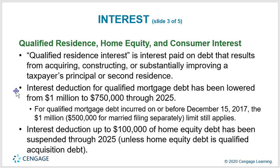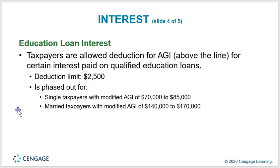Qualified residence interest is interest paid on debt from acquiring, constructing, or substantially improving a taxpayer's principal or second residence. The interest deduction for qualified debt has been lowered from $1 million to $750,000 through 2025. For qualified mortgage debt incurred on or before December 15, 2017, the $1 million limit still applies. Interest deduction for up to $100,000 of home equity debt has been suspended through 2025 unless the home equity debt is qualified acquisition debt. For education loan interest, the deduction limit is $2,500, phased out for single taxpayers with modified AGI of $70,000–$85,000 and married taxpayers with modified AGI of $140,000–$170,000.